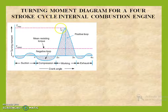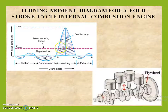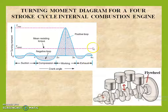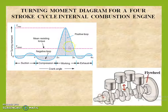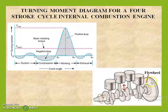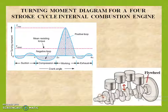This represents the turning moment diagram for a four-stroke cycle internal combustion engine. Here we have the T mean line. This much energy is required for overcoming the mean resisting torque, but we have excess energy only during the expansion stroke or working stroke. This energy is stored in the flywheel, and during the remaining operations — that is suction, compression, and exhaust — the rotational energy stored in the flywheel is transmitted to the crankshaft, so we can more or less maintain a constant speed, and the fluctuation of speed can be made minimal.